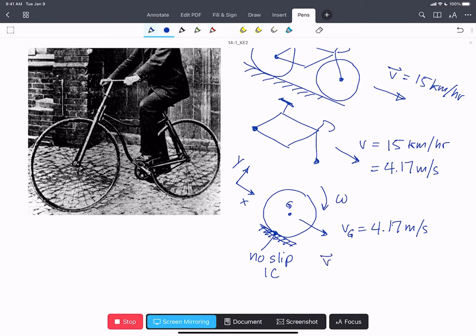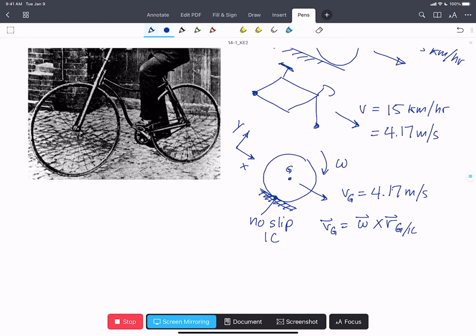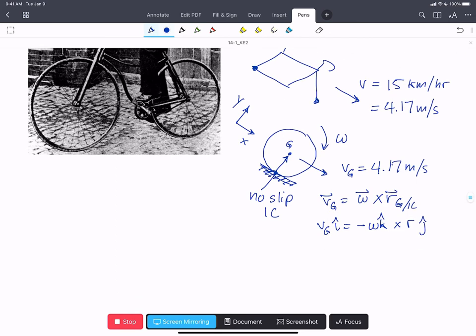So we can write the relationship VG equals omega cross R, G with respect to the IC. VG is going to be in the I hat direction, equals negative omega in the K hat direction, the way we've drawn it, cross R, the radius in the J hat direction. We end up with VG in the I hat equals omega R in the I hat or VG equals omega R.